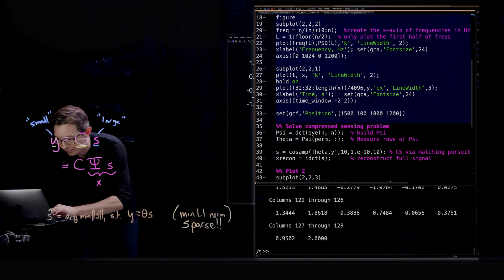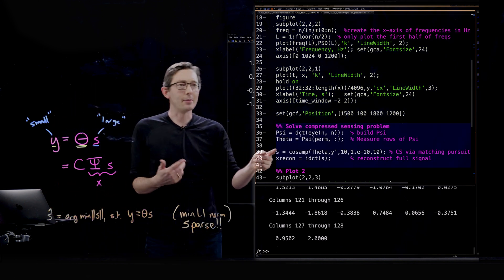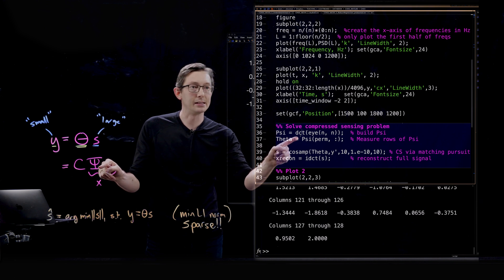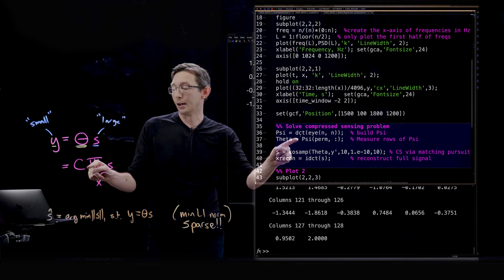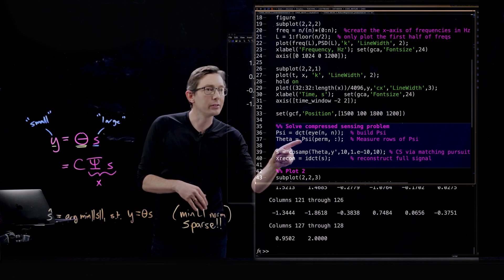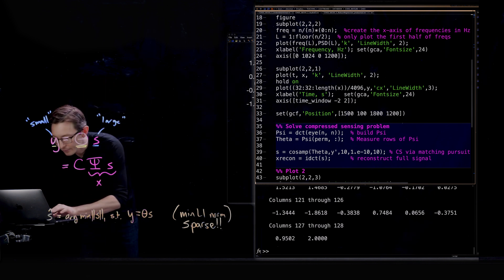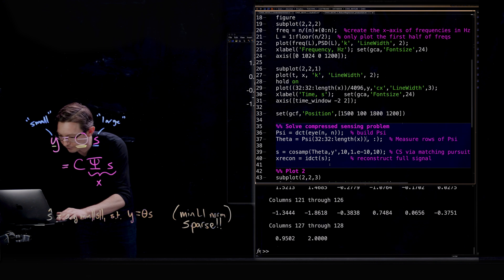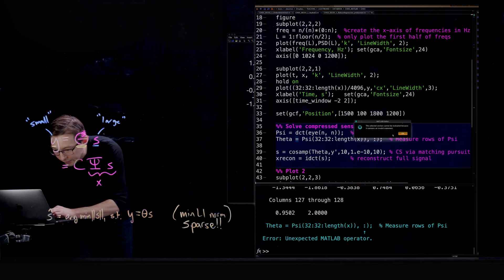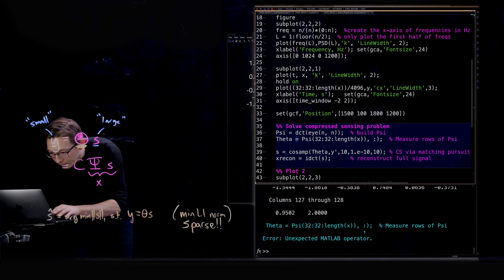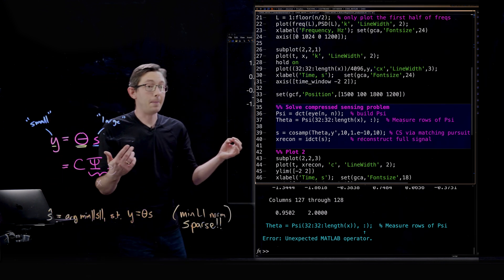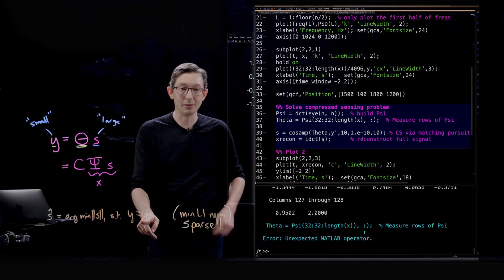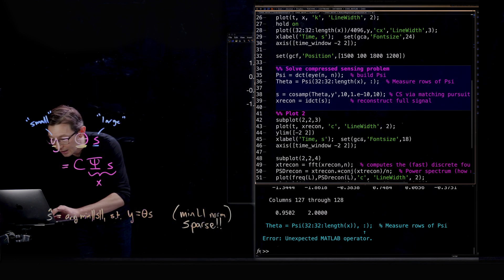Now we're going to run our cosamp algorithm down here. Remember, our psi here is this discrete cosine transform matrix. And this C matrix tells me when I sampled. Now that can't be perm. It has to be 32 by 32 by length of X. I need to be very careful or else everything's going to break. There's a chance something will still break. And it's running the cosamp. It thinks it has a solution. It's going to try to find the sparsest solution that's consistent with these uniformly sampled in time measurements.